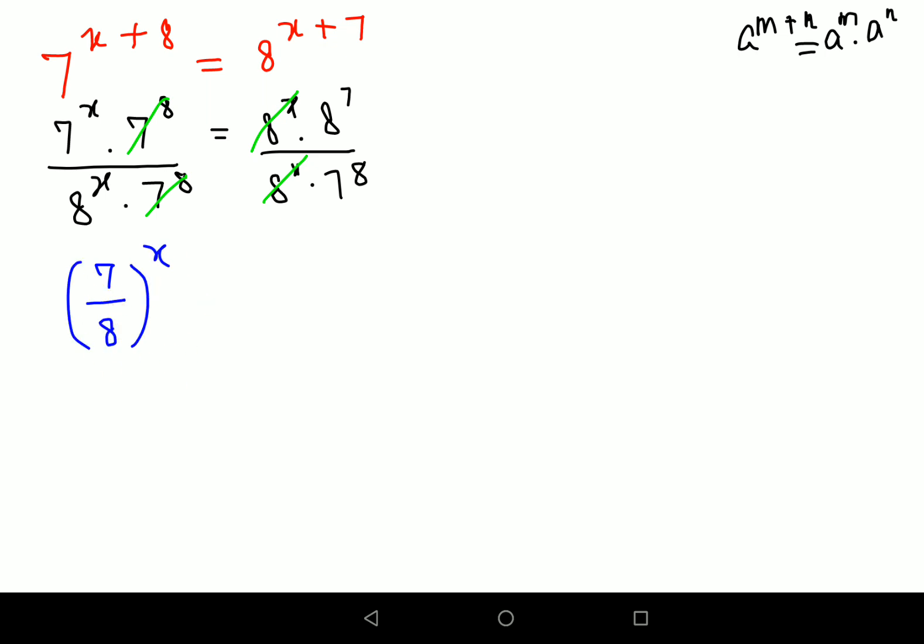Why? Because the indices are the same so I can directly club it. This will now be 8 raised to 7 upon 7 raised to 8.